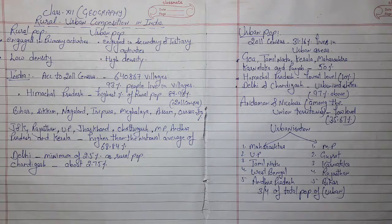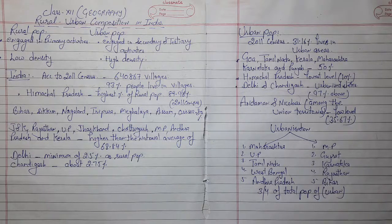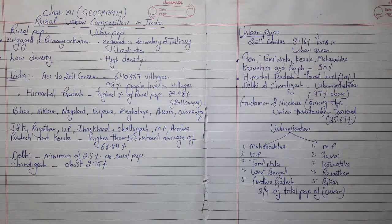There has been a rapid growth of urban population due to migration and natural growth. People migrate from rural areas to urban areas because urban centers offer higher employment opportunities, social facilities, and a higher standard of living. Hence, they attract large populations from rural areas.